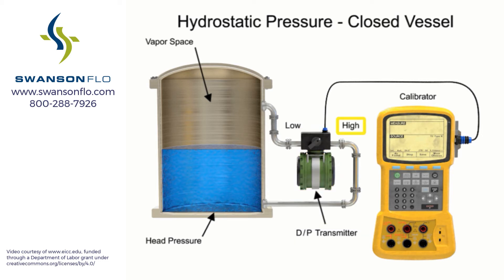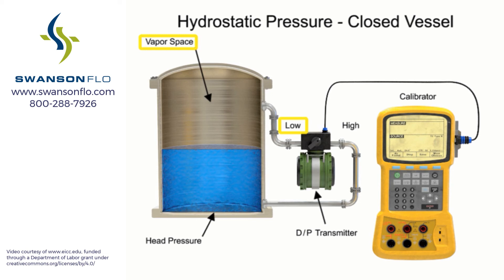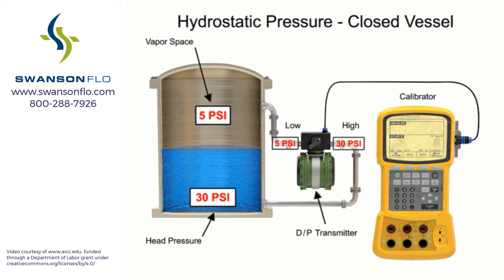This device has a high-pressure side input and a low-pressure side input. The high-pressure input is connected to the bottom of the tank to measure hydrostatic pressure, while the low-pressure input is connected to the vapor space pressure. The transducer subtracts the vapor pressure from the high pressure, resulting in a value that represents the hydrostatic head proportional to the liquid level.